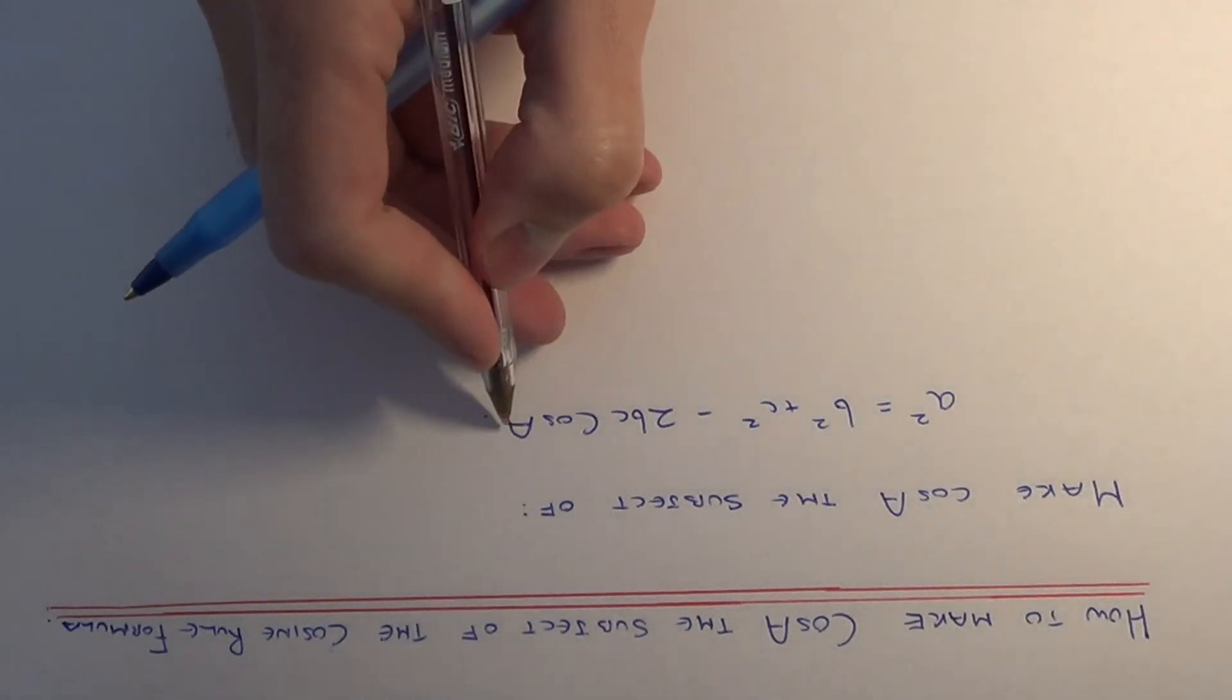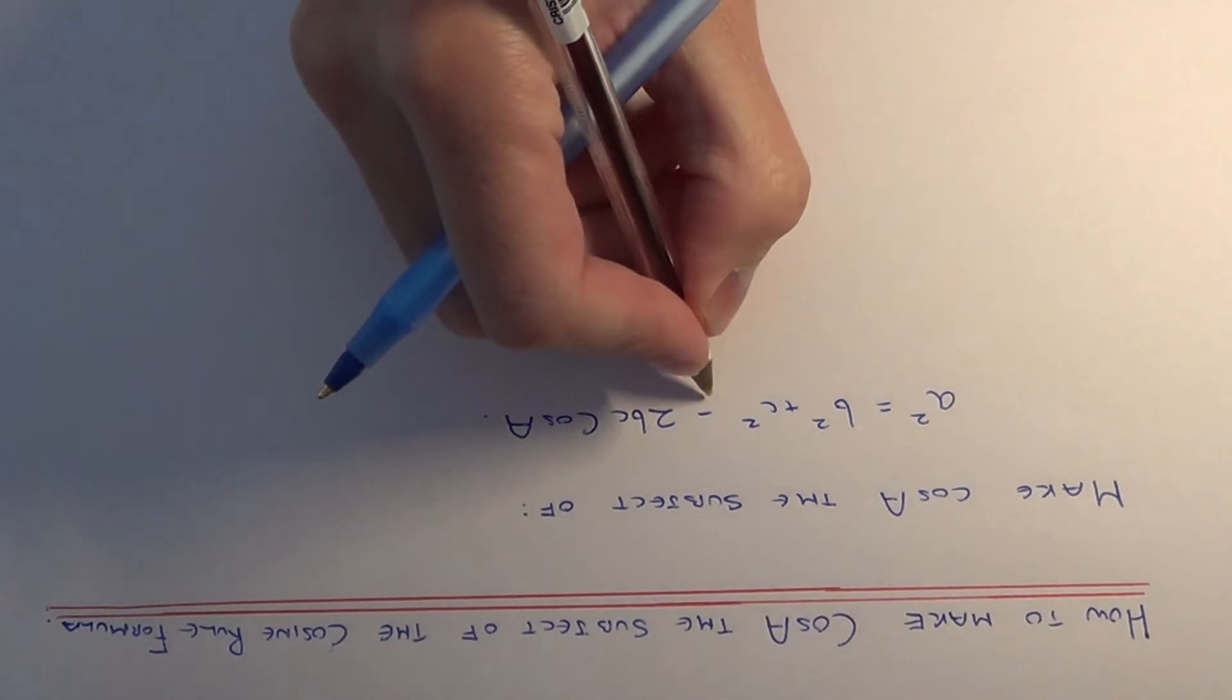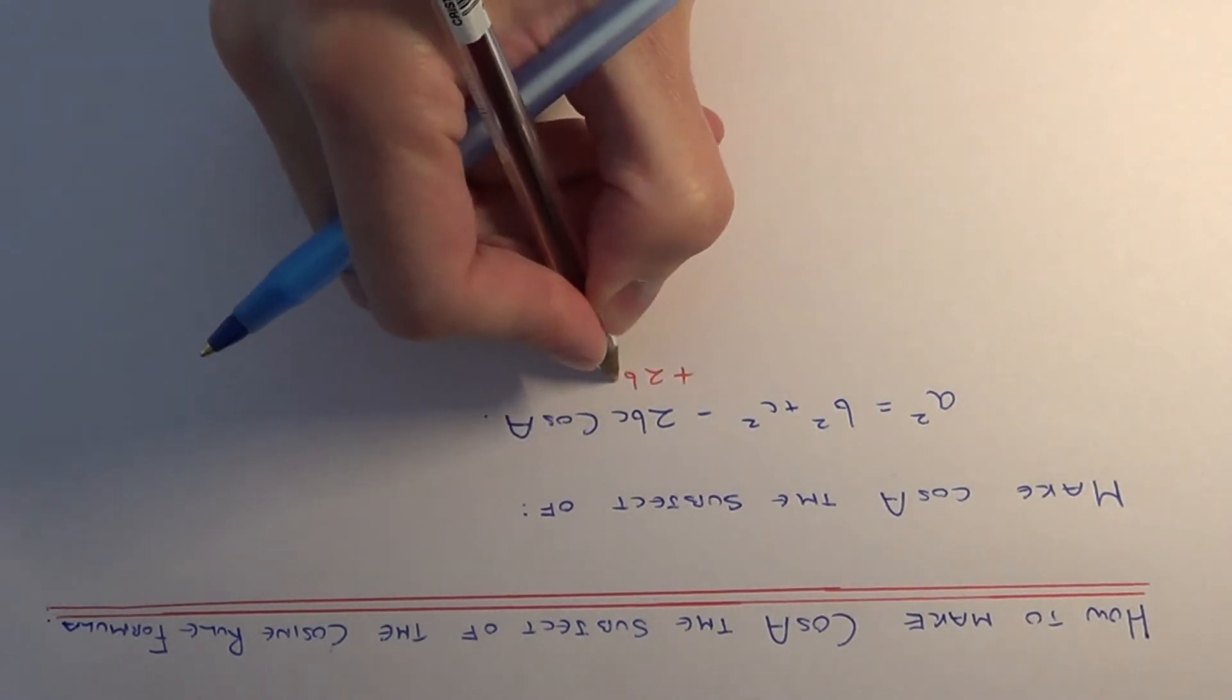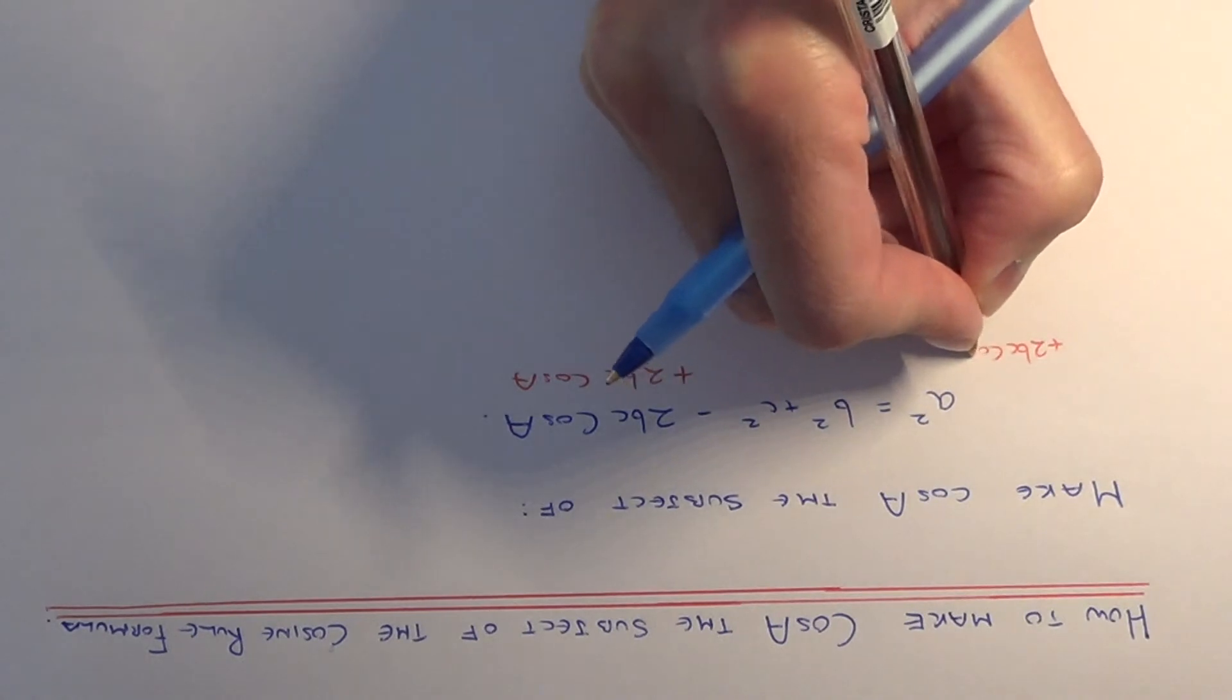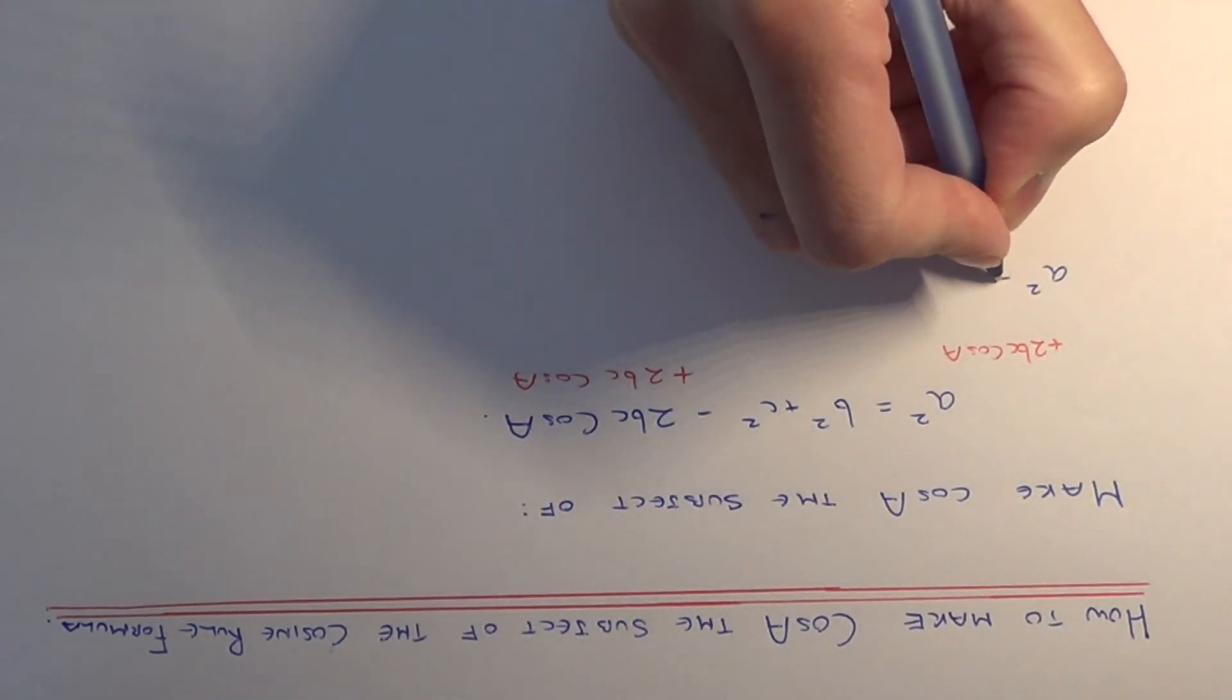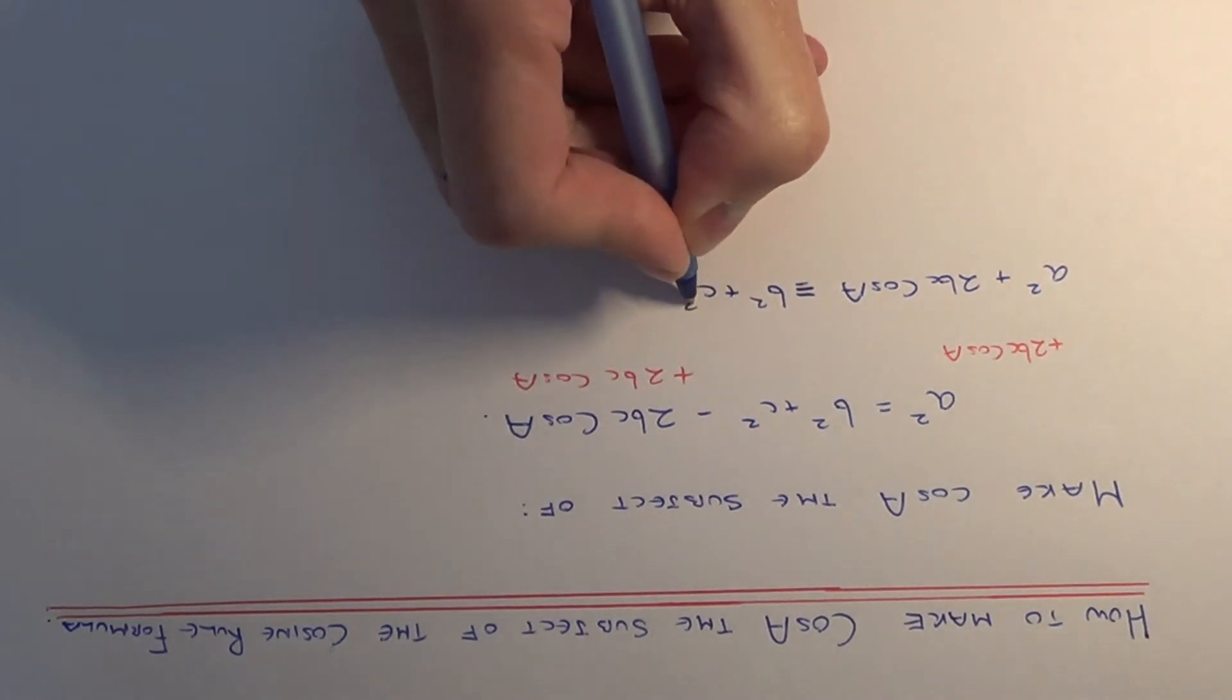The first thing you need to do is move this term here to the left hand side of the formula. So the opposite to minus 2bc cos A is to add 2bc cos A to both sides. So the next line would be a squared plus 2bc cos A equals b squared plus c squared.